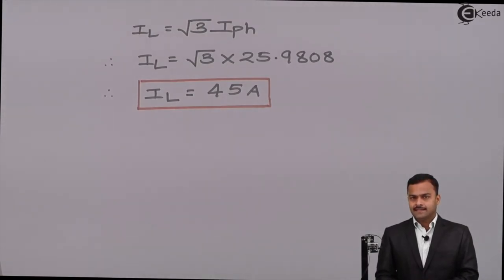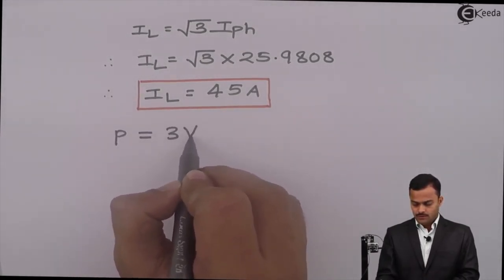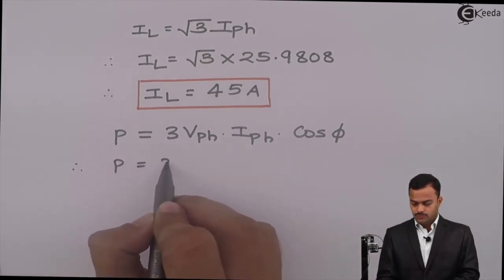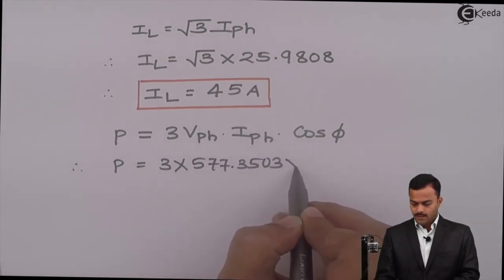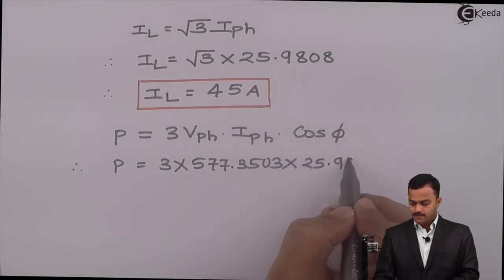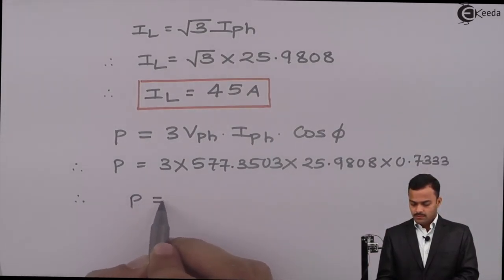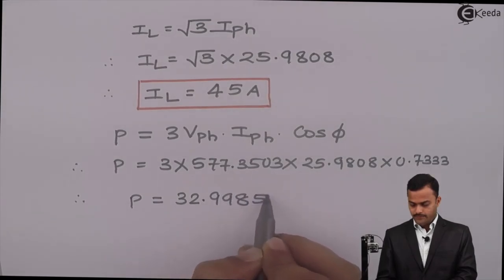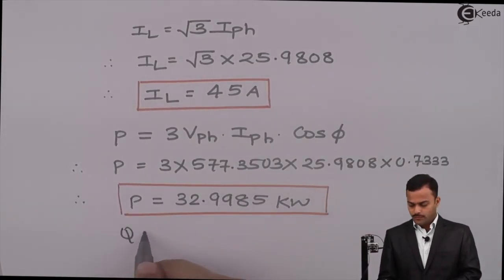Active power: P = 3 · VPH · IPH · cosφ = 3 × 577.3503 × 25.9808 × 0.7333 = 32.9985 kilowatt.